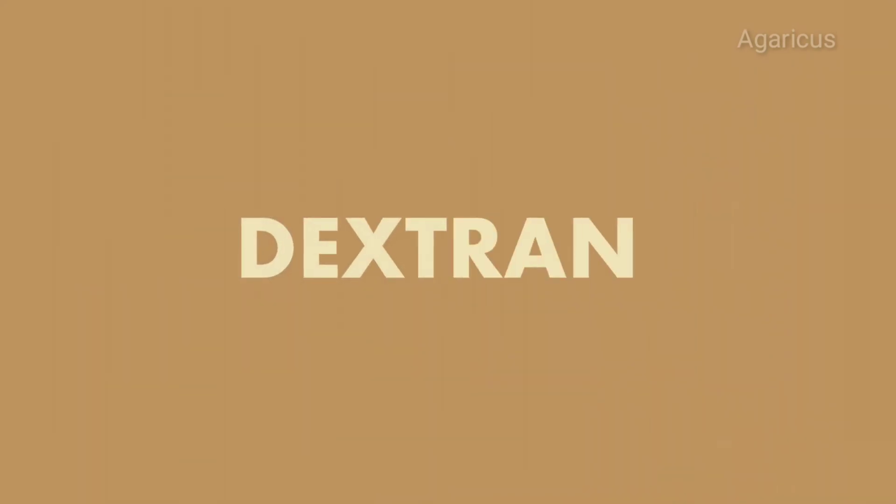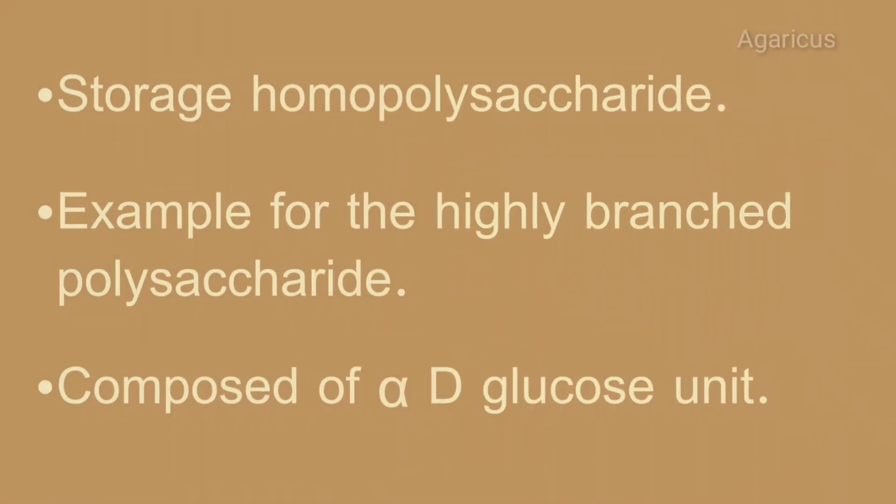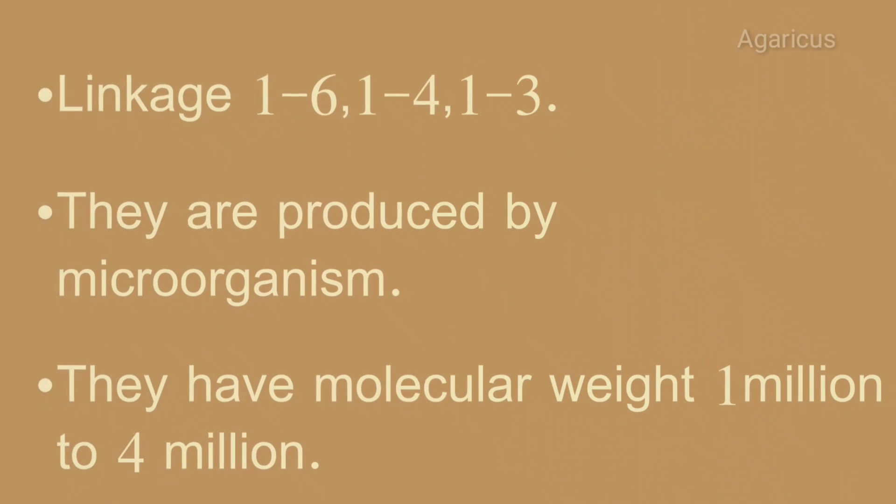Next we can discuss another polysaccharide — dextran. It is an example of a storage homo polysaccharide. It is highly branched in nature and is composed of alpha-D glucose units. The linkages are 1-6, 1-4, and 1-3.